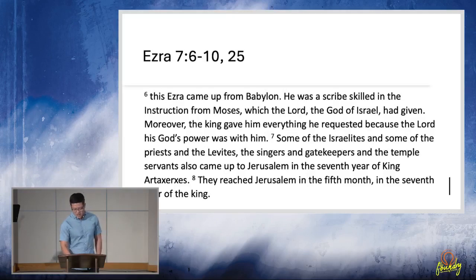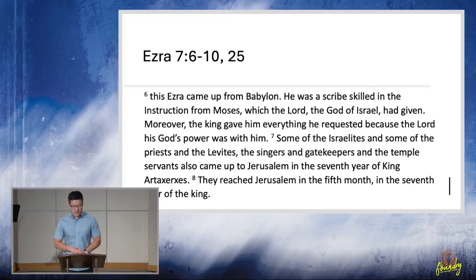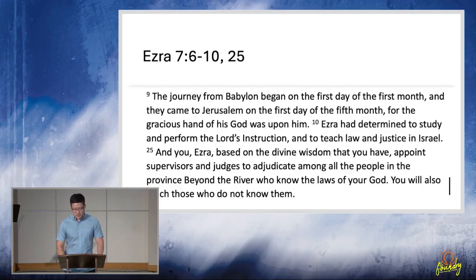And one of the changes that Ezra is going to try to accomplish with the people of Israel is placing God at the center of their worship again because they hadn't made God the center of their worship. And so we read in Ezra chapter 7, verse 6 through 10 and 25. It says, This Ezra came up from Babylon. He was a scribe skilled in instruction from Moses, which the Lord, the God of Israel, had given. Moreover, the king gave him everything he requested because the Lord, his God's power was with him. Some of the Israelites and some of the priests and the Levites, the singers and the gatekeepers and the temple servants also came up to Jerusalem in the seventh year of King Artaxerxes. They reached Jerusalem in the fifth month in the seventh year of the king. The journey from Babylon began on the first day of the first month and they came to Jerusalem on the first day of the fifth month for the gracious hand of his God was upon him. Ezra had determined to study and perform the Lord's instruction and to teach law and justice in Israel.